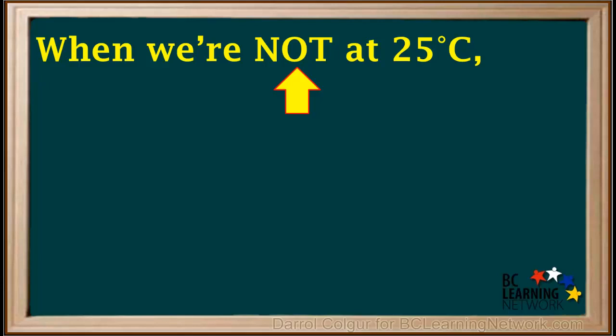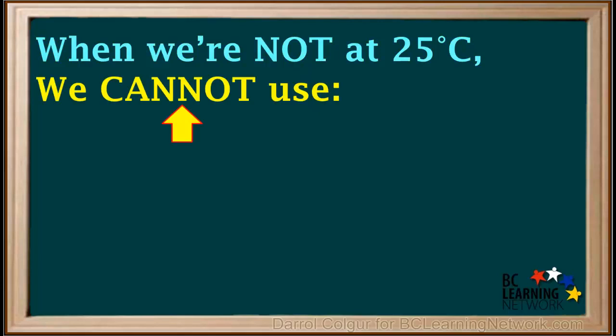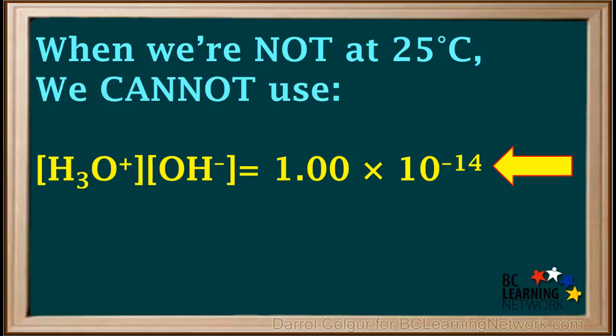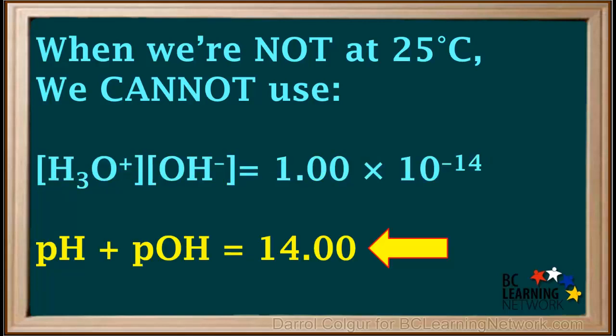Before we start the example, it's very important to remember that when we're not at 25 degrees, we cannot use concentration of hydronium times concentration of hydroxide is 1 times 10 to the negative 14th, and we cannot use pH plus pOH is equal to 14.